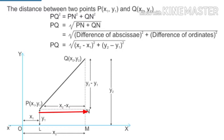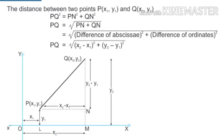From the origin O to L, the distance is x1. Similarly, from O to M it is x2. From point L to P, the distance is y1, because it is along the y-axis direction. And from point M to Q, the distance is y2.